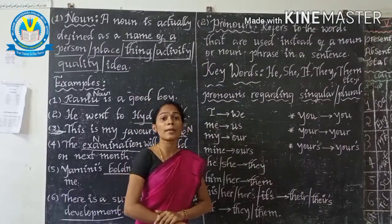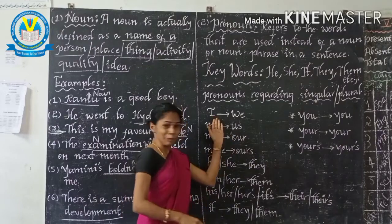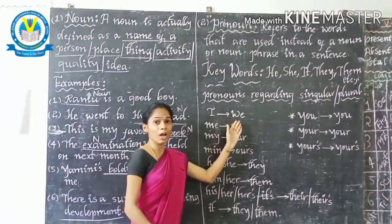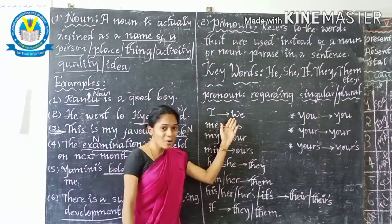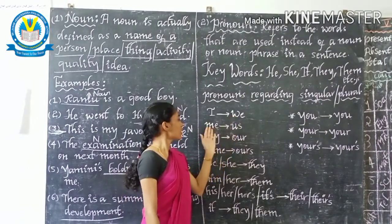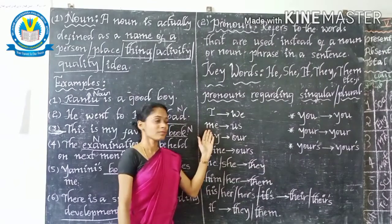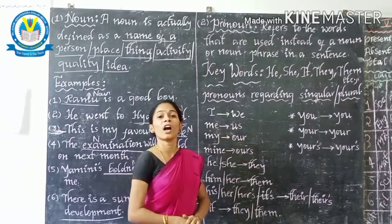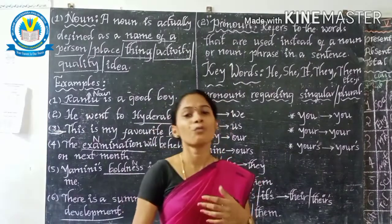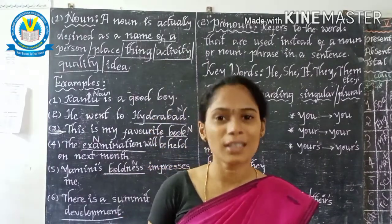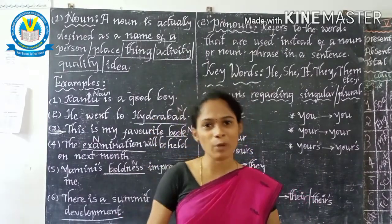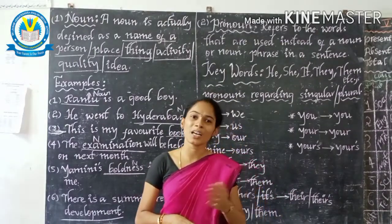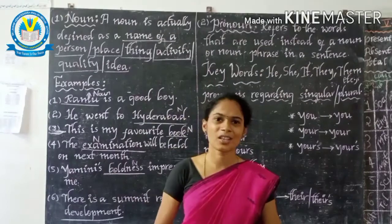Let us discuss some examples. 'I am going to the movie.' By changing to plural, we write: 'We are going to the movie.' 'He likes me a lot' becomes 'He likes us a lot.' Just like that, we have many pronouns we use instead of nouns. Thank you for watching my video. In my next video, I will go deep into the other two parts of speech. Thank you.